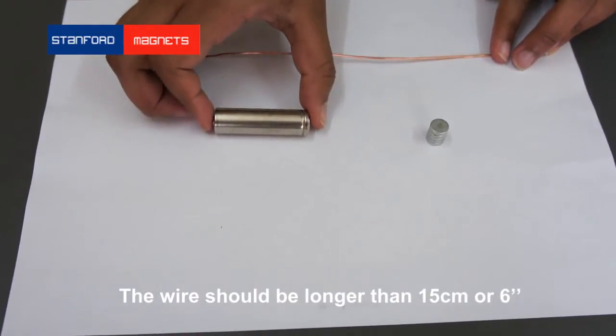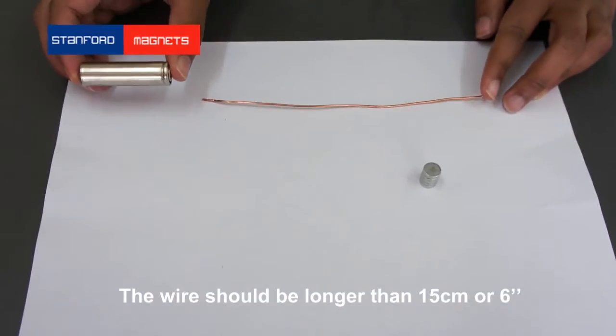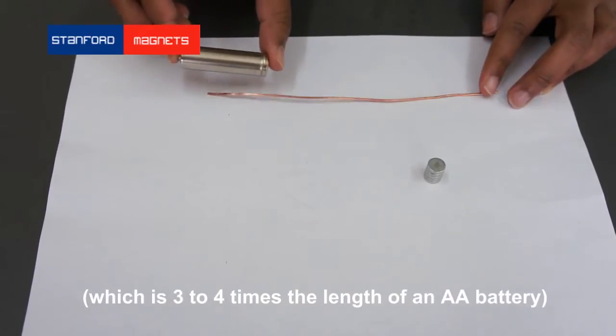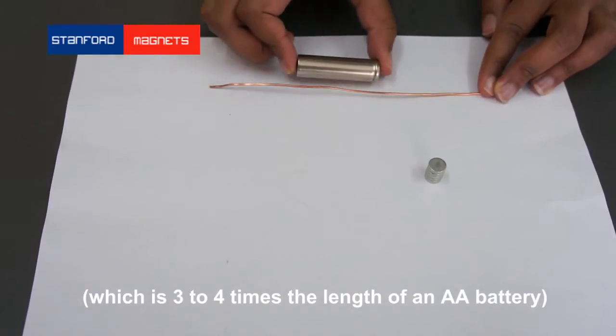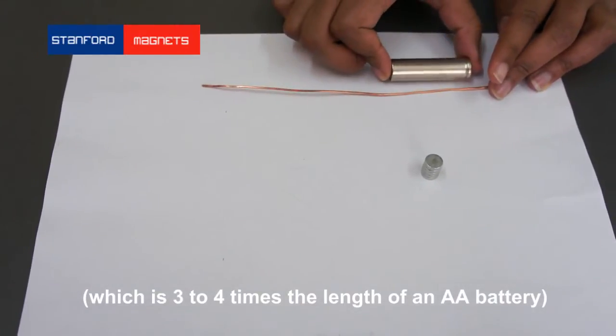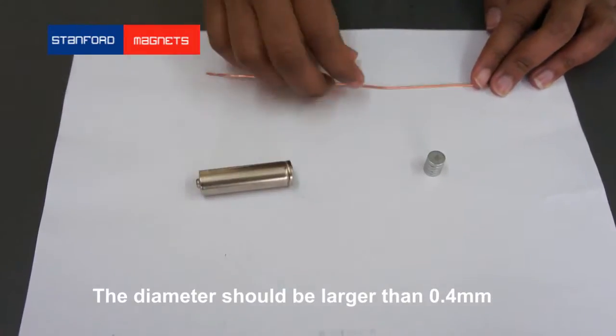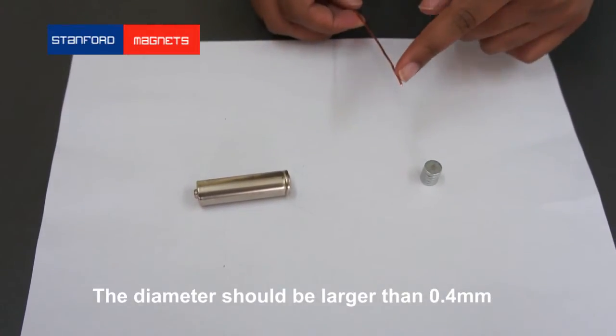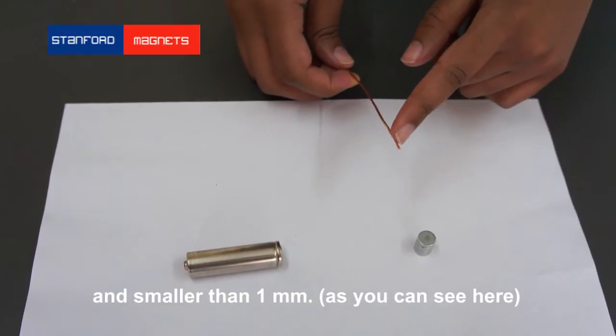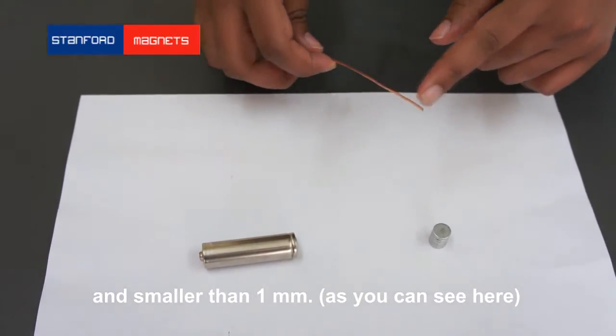The wire should be longer than 15 centimeters or 6 inches, which is roughly the same size as 3 to 4 times of an AA battery. The diameter should be larger than 0.4 millimeter and smaller than 1 millimeter.